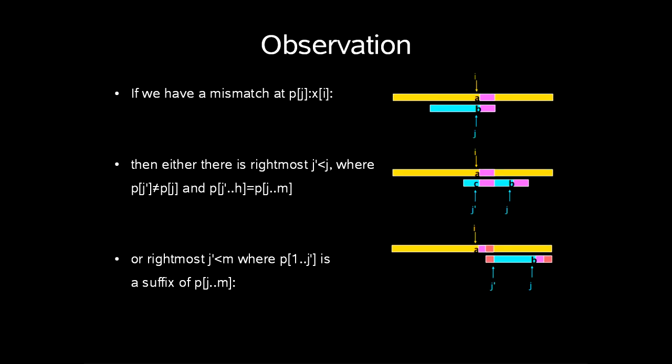If we have a mismatch at p[j], x[i], then either there is a rightmost j prime less than j where p[j prime] is different from p[j] and p[j prime] up to h match p[j] to m, or rightmost j prime is less than m where p[1] up to j prime is a suffix of p[j] up to m.